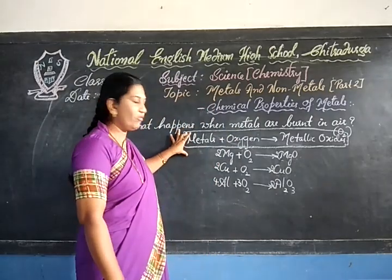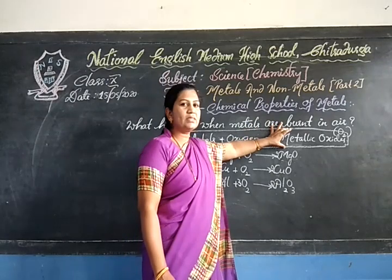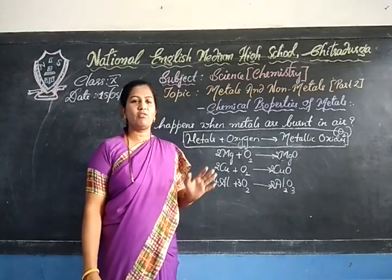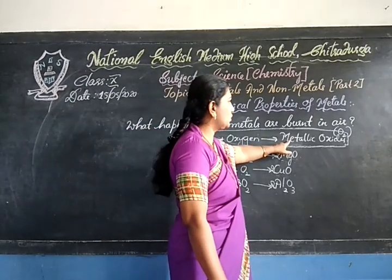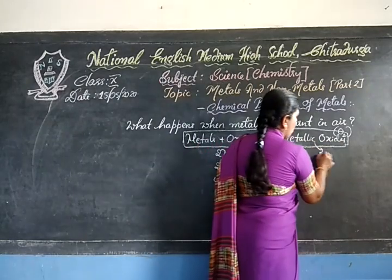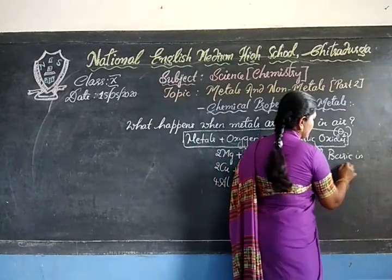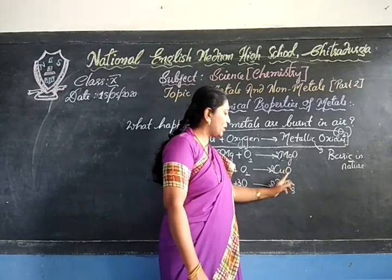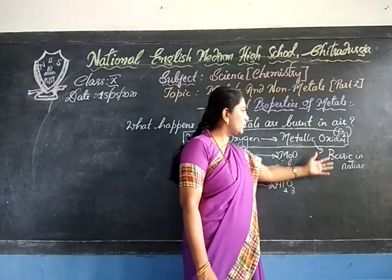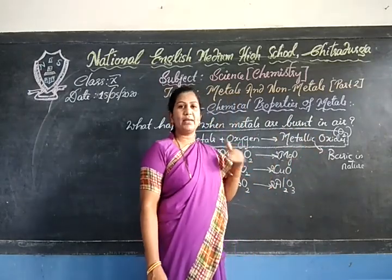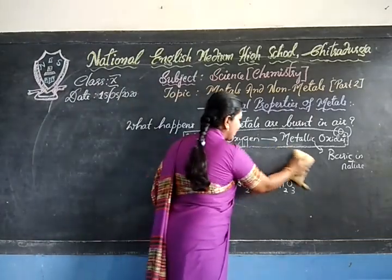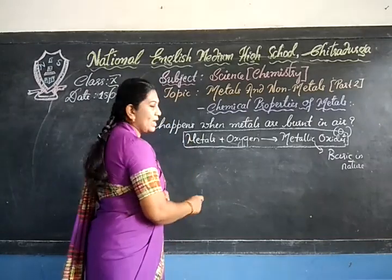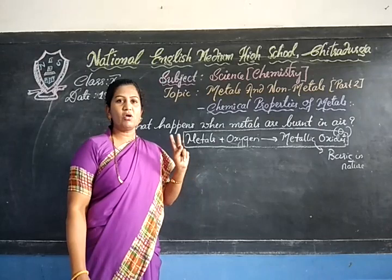The general formula is: metals when they react with oxygen give rise to metallic oxide. Any metal, when it reacts with oxygen, gives rise to metallic oxide. And these metallic oxides are always basic in nature. Almost all metallic oxides — magnesium oxide, cupric oxide, aluminium oxide, zinc oxide — they show basic nature. But some metals, when they react with oxygen, form metallic oxides that exhibit both basic as well as acidic behavior. Two very classical examples of this behavior are aluminium oxide and zinc oxide.